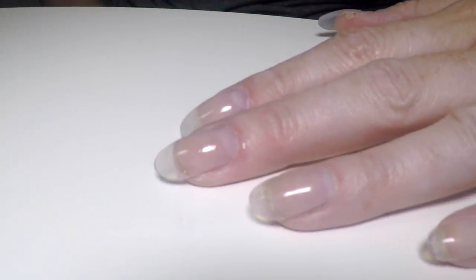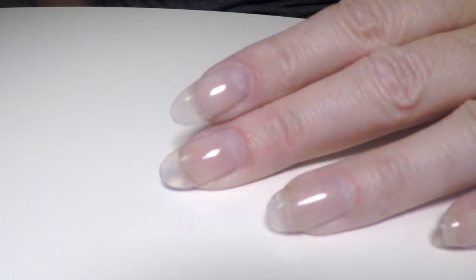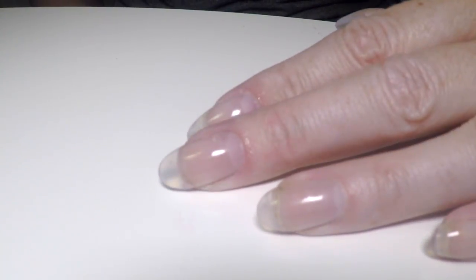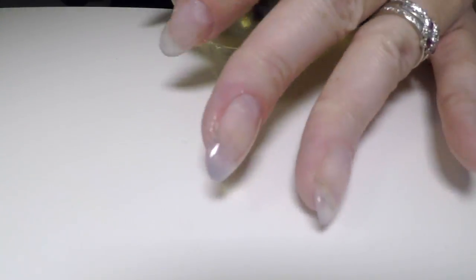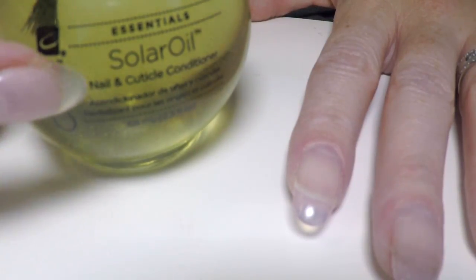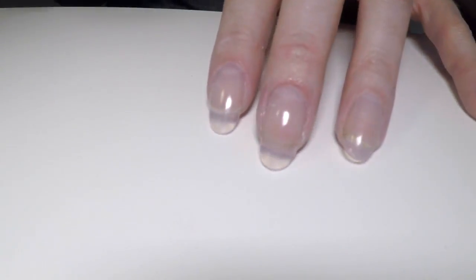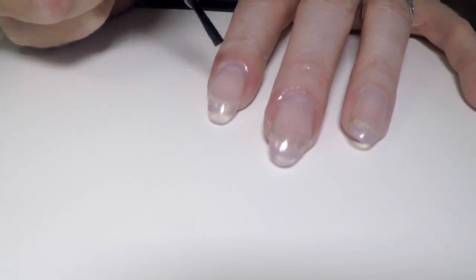Now, after it dries for a little bit, you want to grab your cuticle oil. Again, my favorite is CND solar oil. I love this stuff. Smells like amaretto. Delicious. Go around the cuticle and under the free edge. This will prevent your natural nail from curling away from the enhancement.